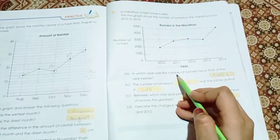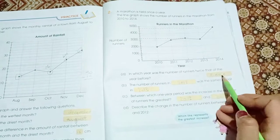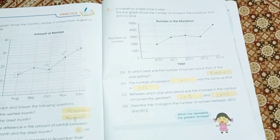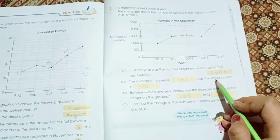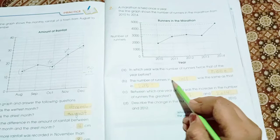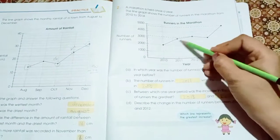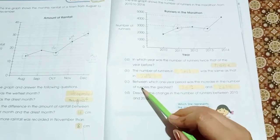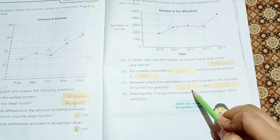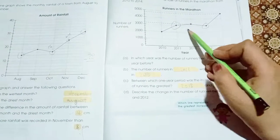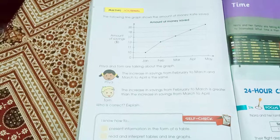Page number 248. Here we have, in which year was the numbers of runner twice that of the year before? There is no month in which the runners run twice. The number of running in 2017 was the same as the number of 2013. 2011 and 2013 are same. Between which one year period was the increase in the numbers of runners the greater? 2013 and 2014. From 2013 to 2014 there is an increase.